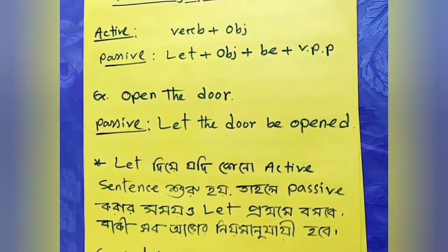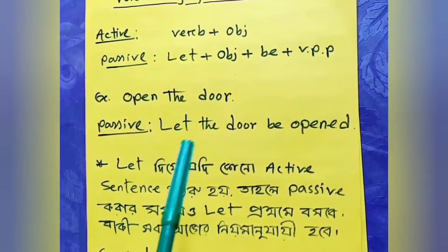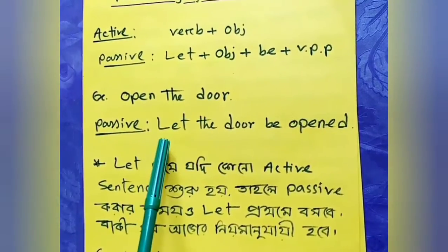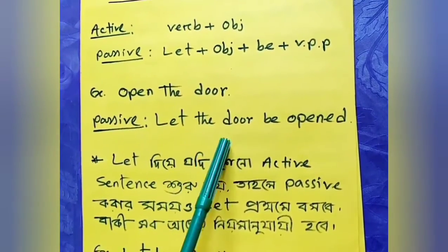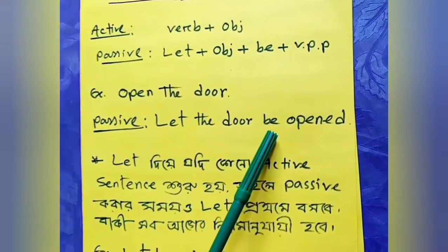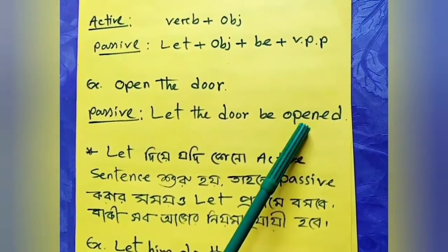'Shut the door' becomes 'let the door be shut' — the past participle of 'shut' is 'shut.' So when making imperative sentences passive, we use: 'let' + object + 'be' + past participle of the verb.